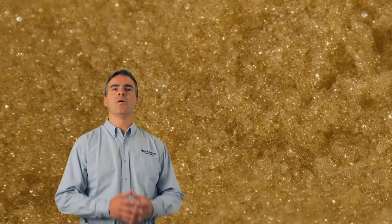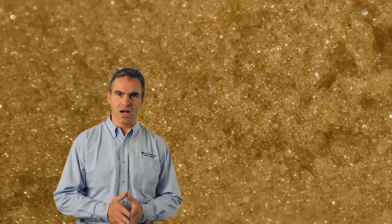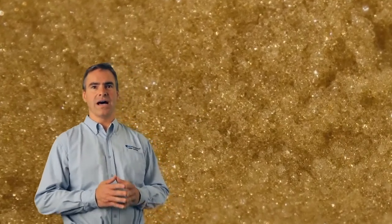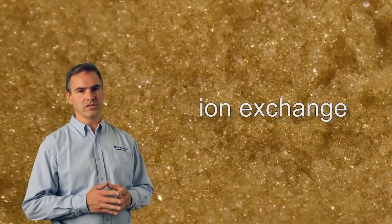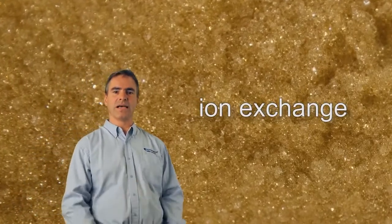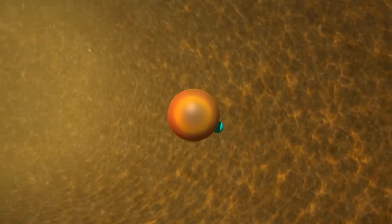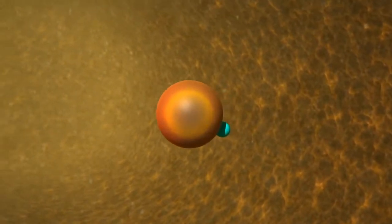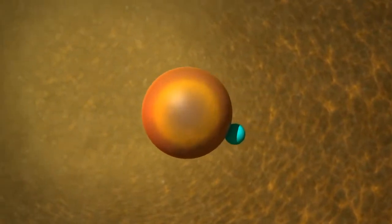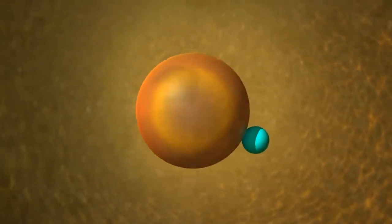Sorry! Water softeners remove dissolved rock and iron by a process called ion exchange, through the use of electrostatically sensitive plastic beads, called resin. Here you can see a resin bead with an ion of sodium or potassium attached. I'd like to introduce you to Mr. Resin.